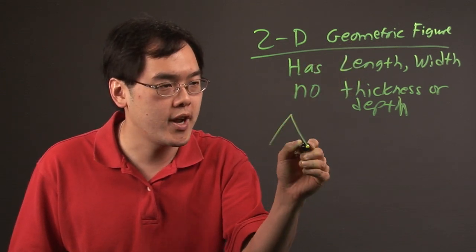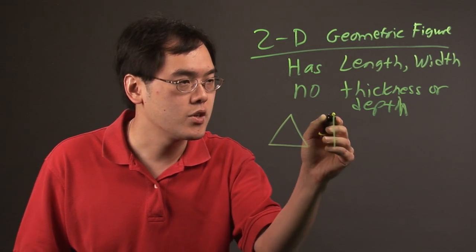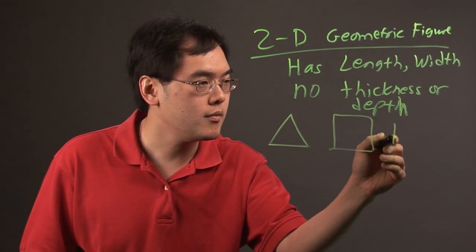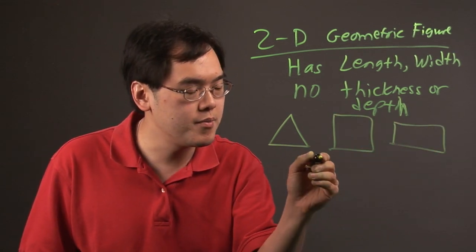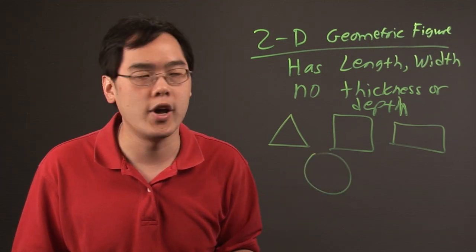For example, a triangle is two dimensions, square, rectangle. You can even make a case that a circle is two dimensions as well.